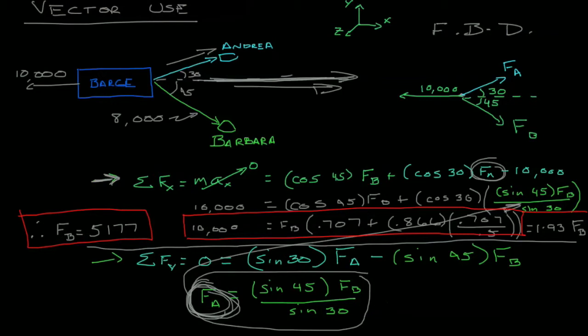And from here to solve, we can go ahead and solve for force A. All we do is we take this force B, 5,177, and I'll try and get narrow here, and we plug it in right here. So we're going to get 0.707, sine of 45 is 0.707. Force B is 5,177.